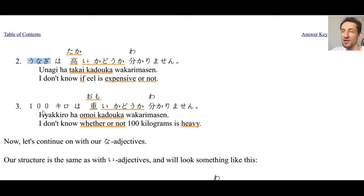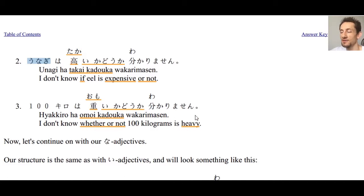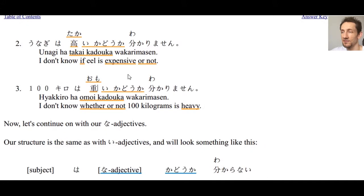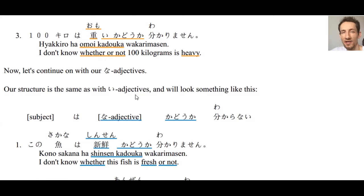Number three: 100キロは重いかどうかわかりません — I'm an American, so I don't know whether or not 100 kilograms is heavy. As you can see, we don't have to change the adjective at all; we just have 高いかどうか, 重いかどうか, おいしいかどうか — we simply append かどうか as it is. Very simple.